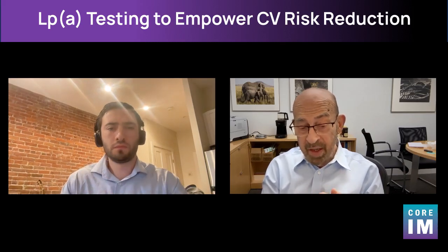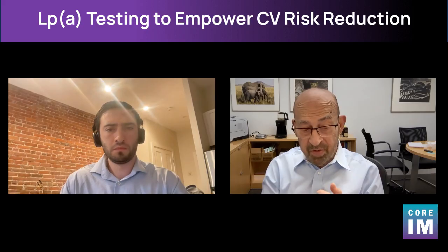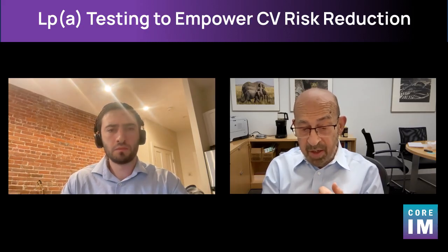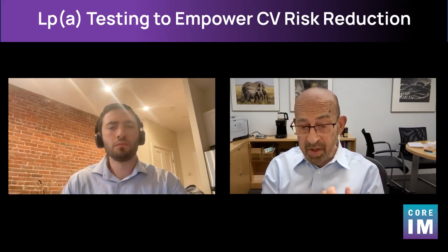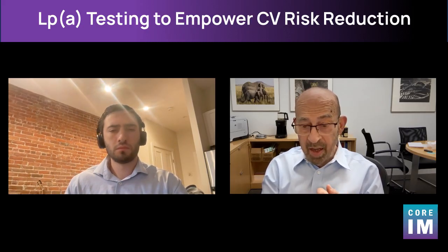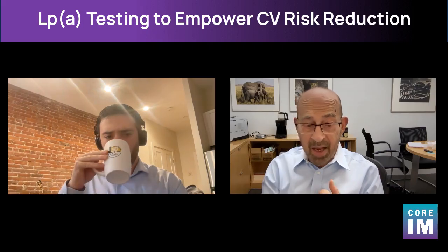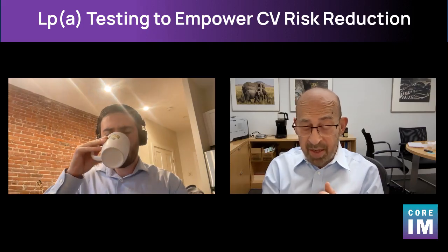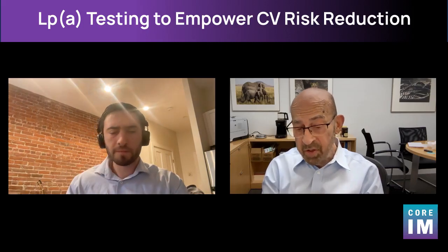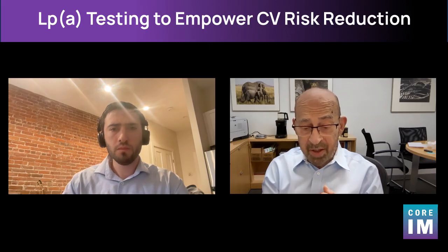Both alleles — that is the allele from each parent — contribute. And so we see that there's a high concordance rate for the disorder amongst first-degree relatives.